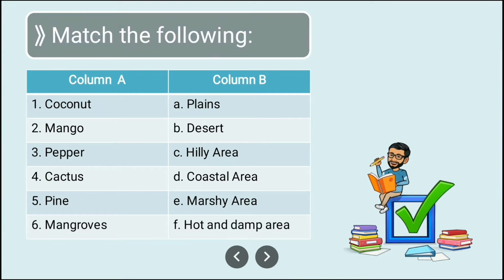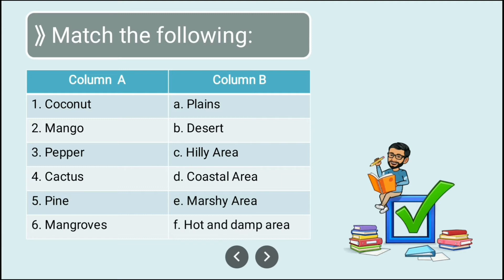We have to match Column A with Column B. Coconut is most often seen in coastal areas. Mango tree is found in plain areas. Pepper is found in hot and damp areas. Cactus is obviously in the desert region. Pine is found in hilly areas, and mangroves are found in marshy areas.